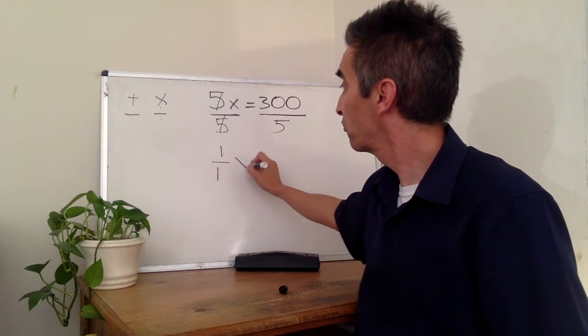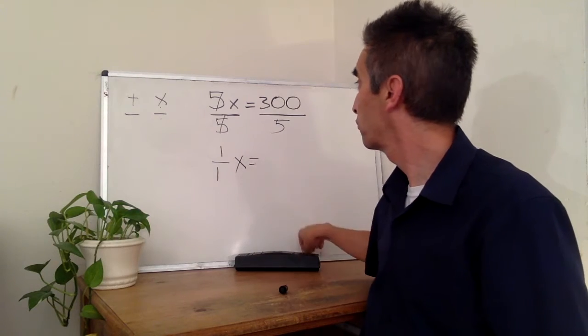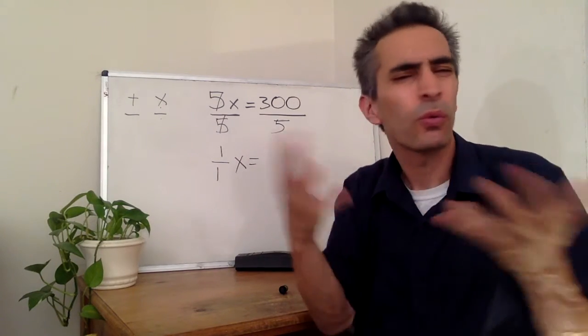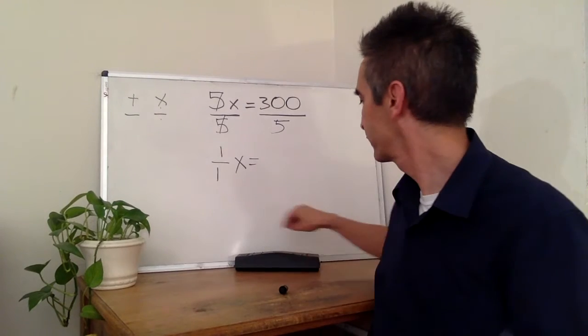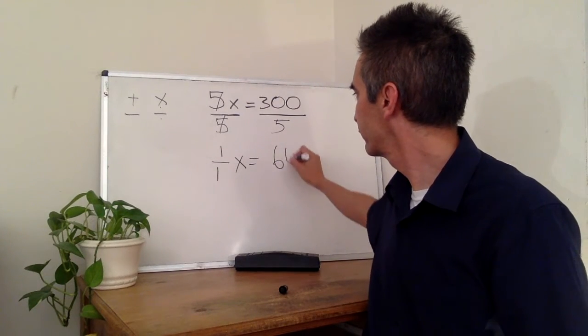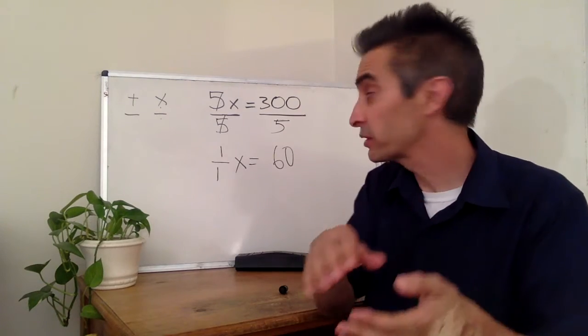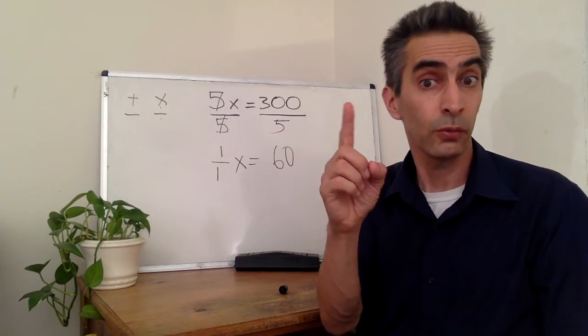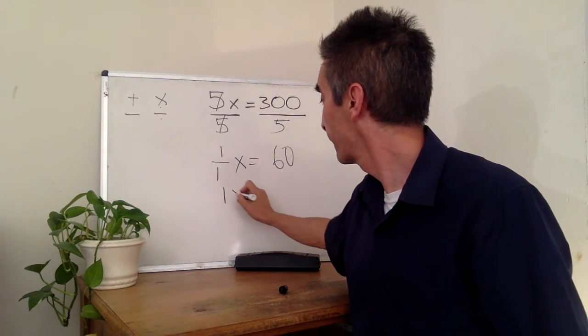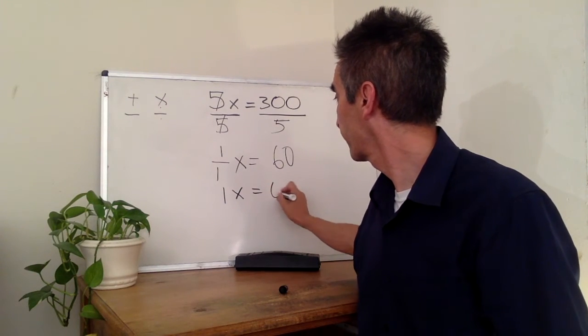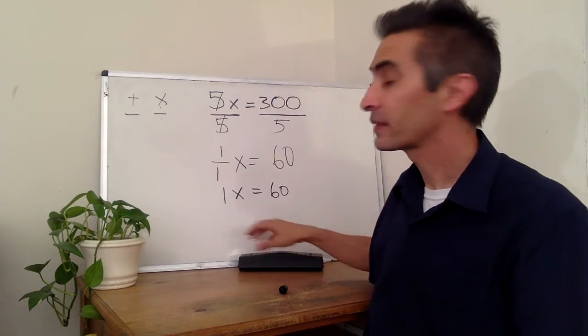And the x remains. 300 divided by 5 equals 60. 1 over 1 can be reduced. 1 over 1 just becomes 1. And we've got 1x equals 60.